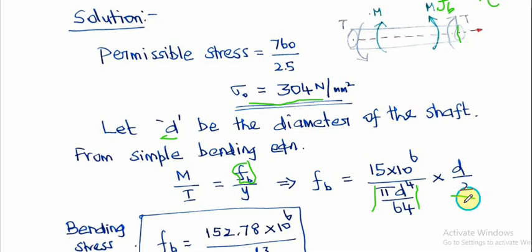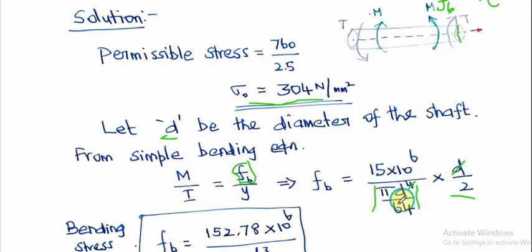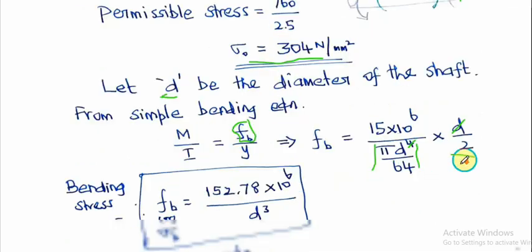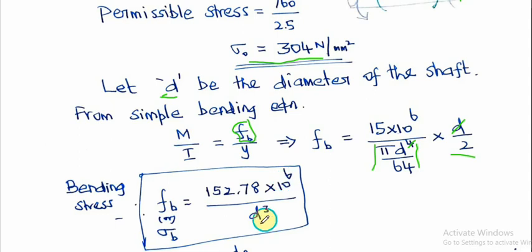Simply writing it out: with M = 15×10⁶, divided by πd⁴/64, multiplied by d/2, the d⁴ cancels with d giving d³ in the denominator. The numerical value works out to σ_b = 152.78×10⁶ / d³, which is our bending stress in terms of diameter d.